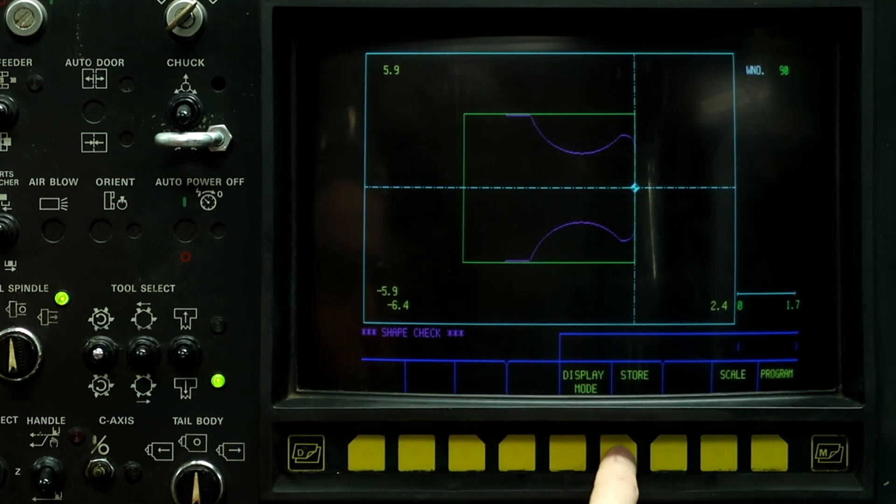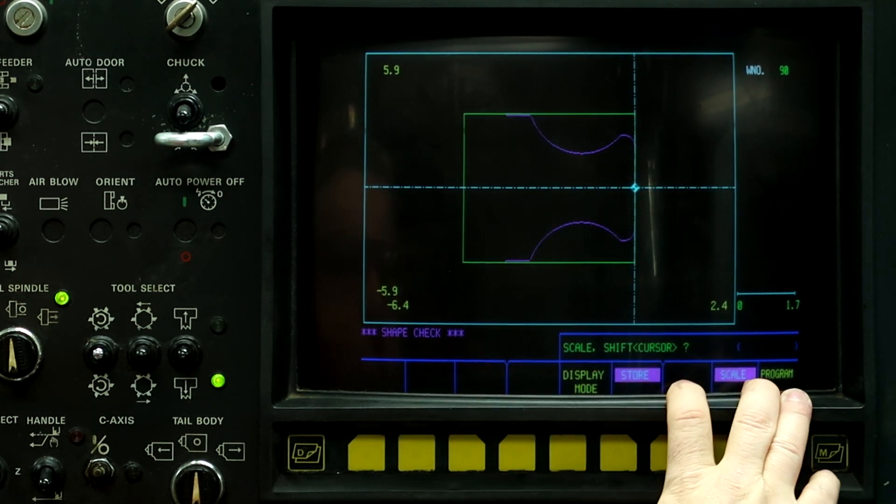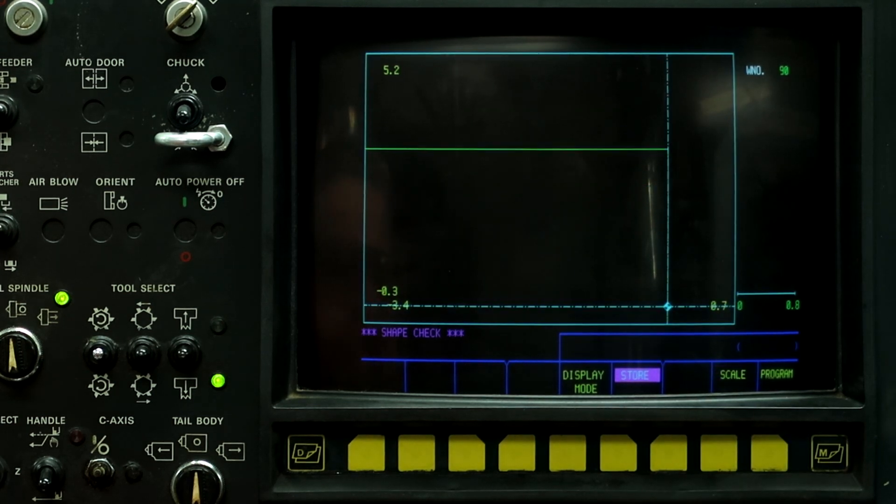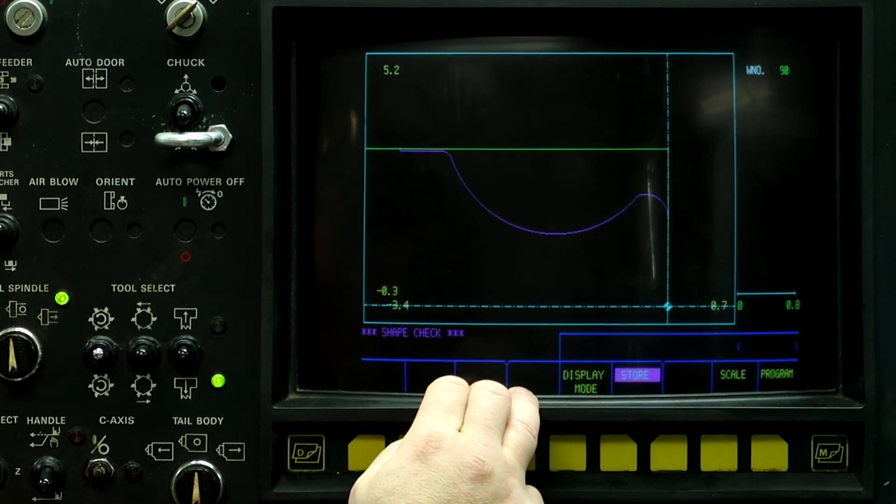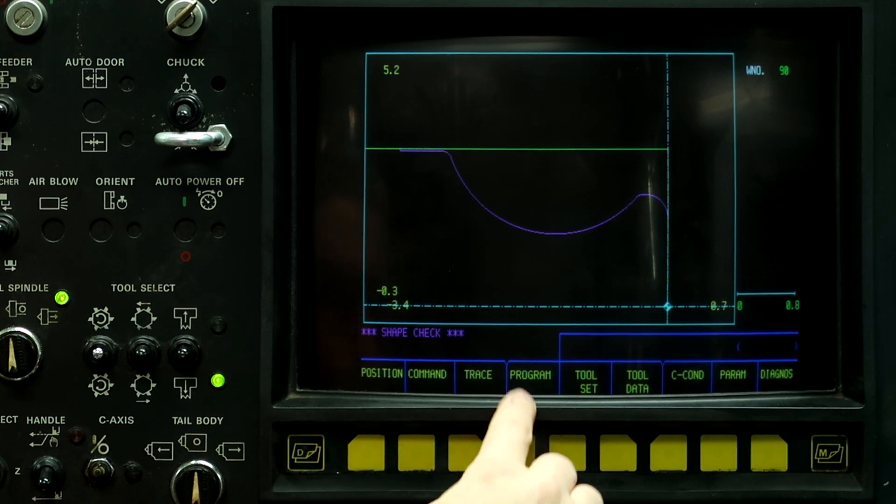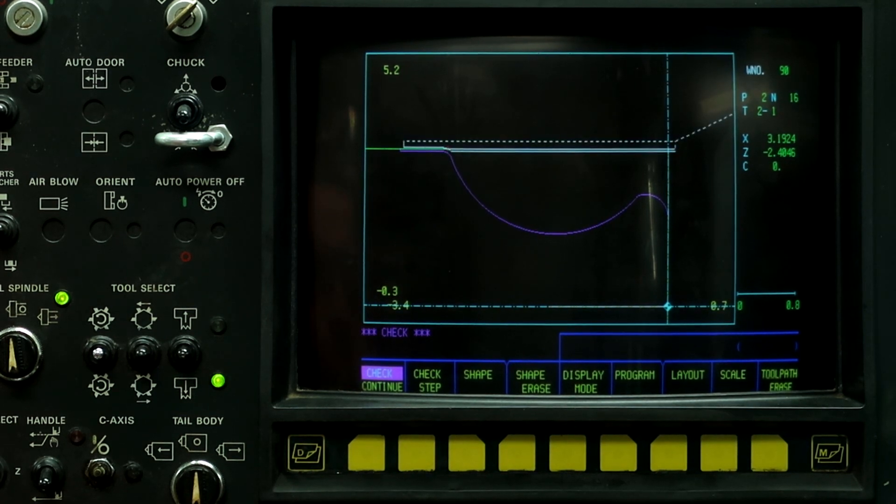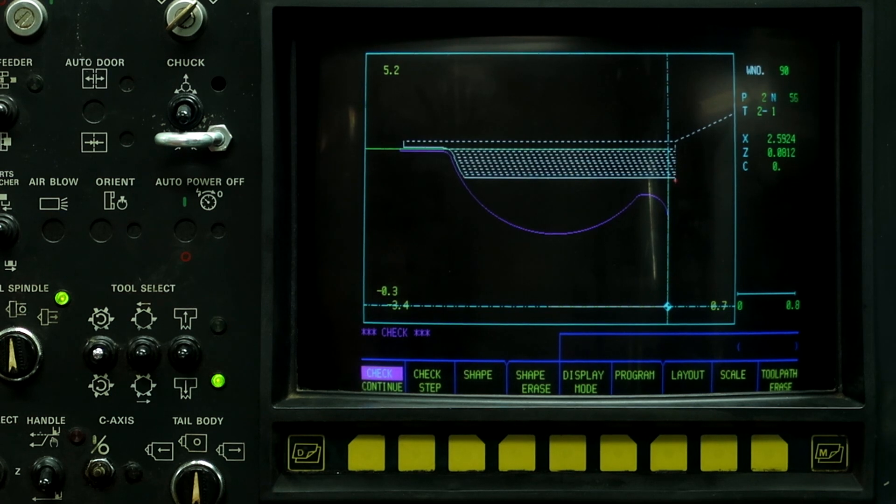So we're going to push the store button, push scale, and we're going to zoom this area up. And there's our part. So now let's check the toolpath. So left button, go to program, check, check continue. And this is the small 30 thousandths nibbles that we're going to be doing because I want to run it without coolant. Normally, I would be doing about a 50 thousandths step to cut with this tool.